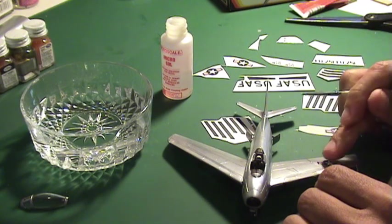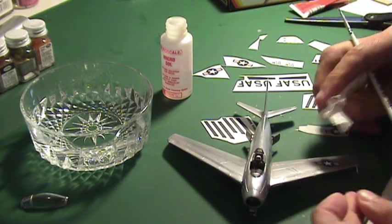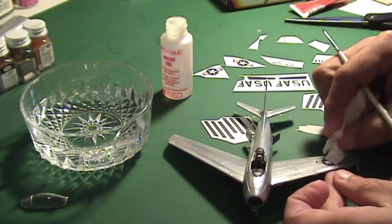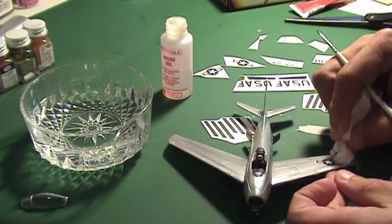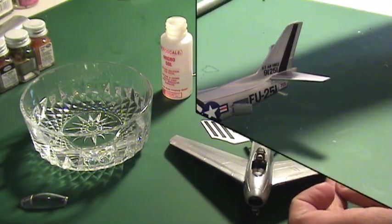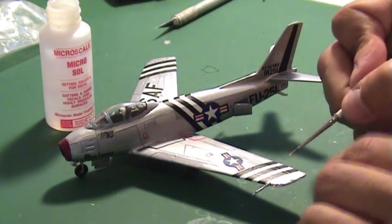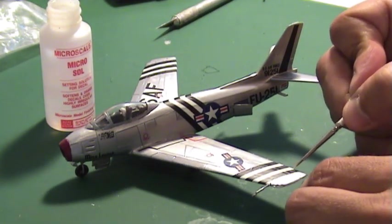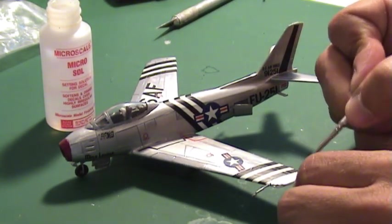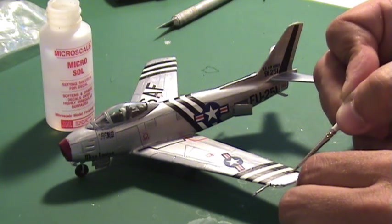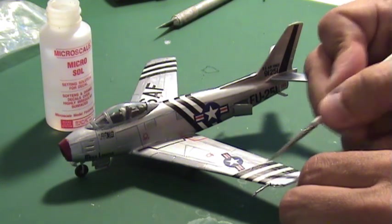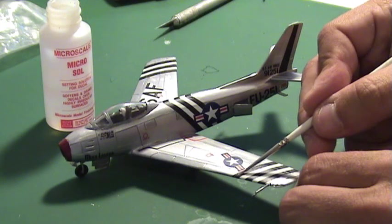Use a piece of tissue to help remove the excess water and setting solution from the area around the decal. Clean the thin milky fluid residue around the decal using the piece of tissue. Apply several coats of setting solution to get the decal adhered properly to the surface.